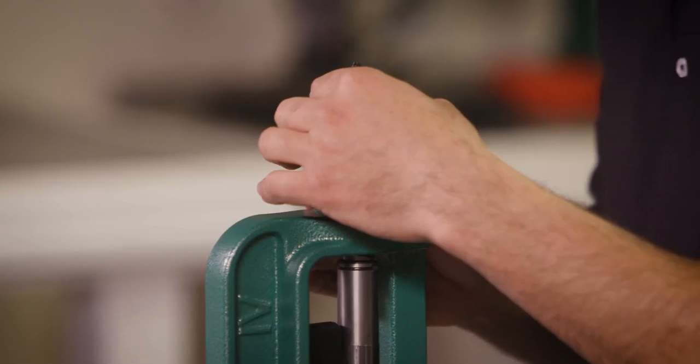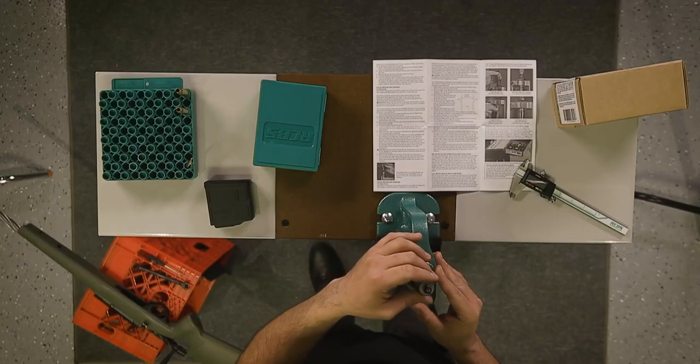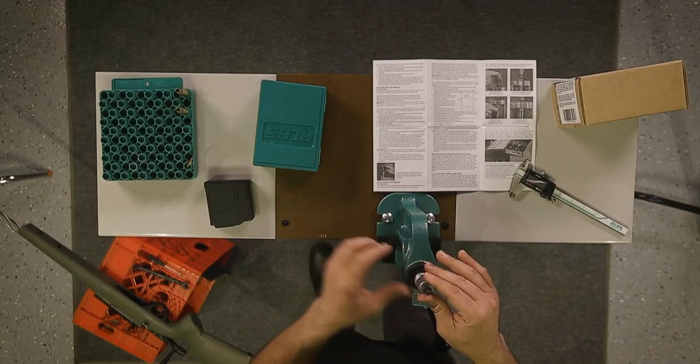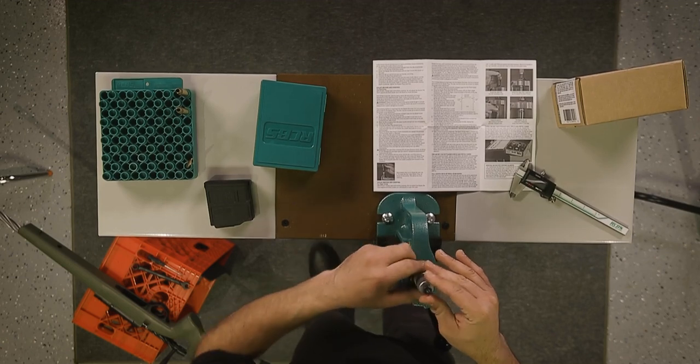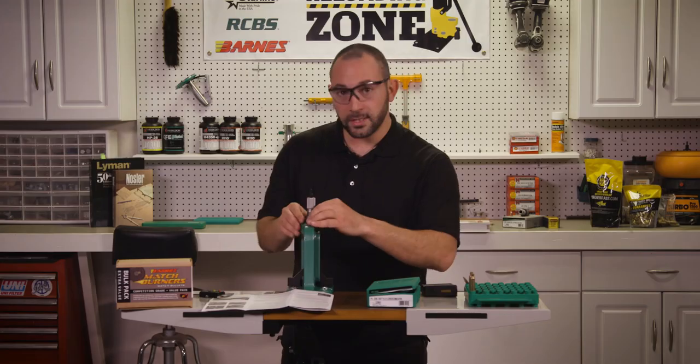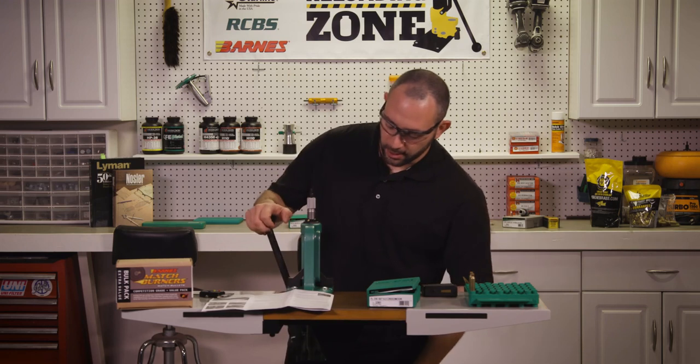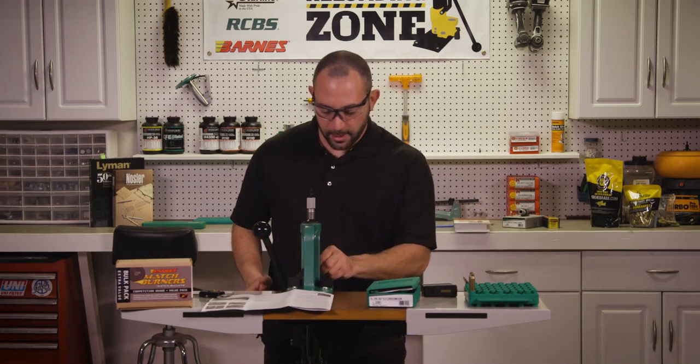For that reason, we want to back our die out one full turn because we don't want to crimp this round. Holding the die in place, we secure the lock ring. Once our die is secured, we remove our cartridge case and we can just leave it there.